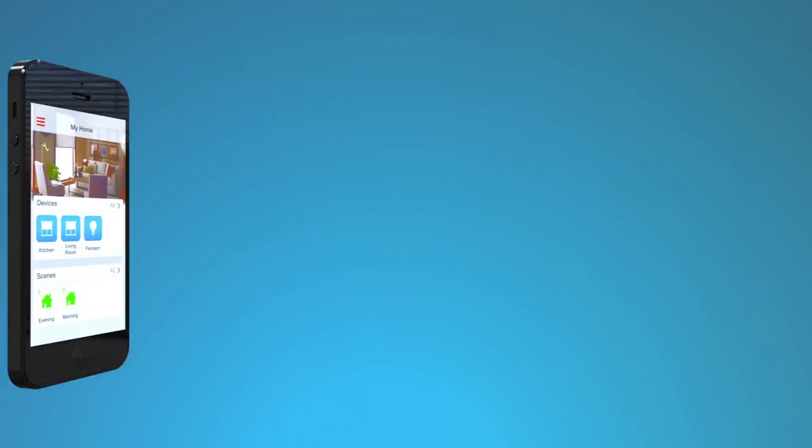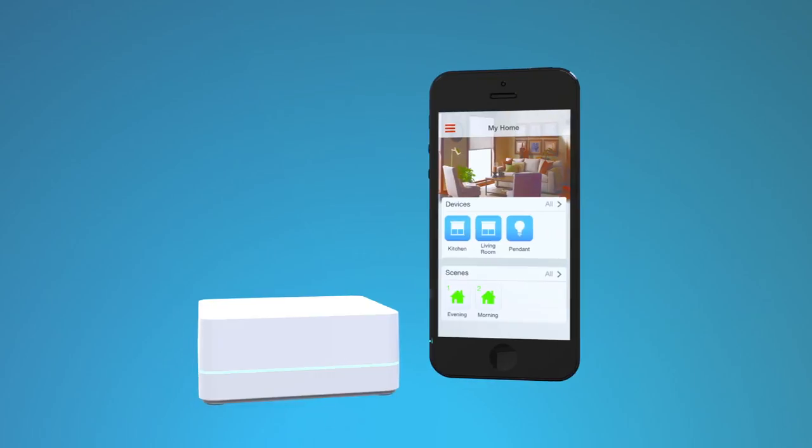Now you can set up your device. If you're using the dimmer and remote control with the Lutron Smart Bridge, you just need to download the Lutron app. The app will guide you through setting up your device.